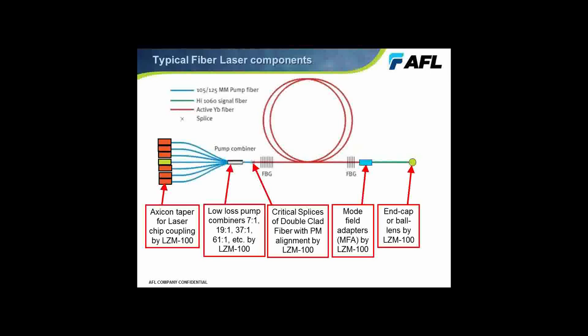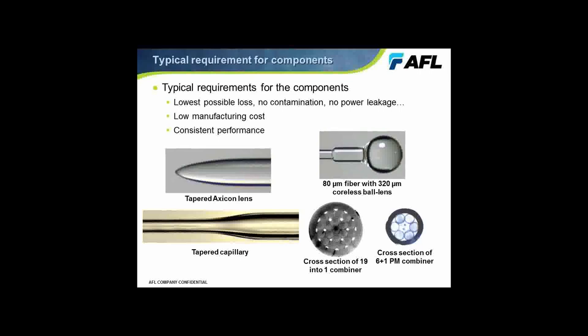A number of things are critical here beyond generating the pump combiner. On the output, we could have something to strip unwanted modes to achieve pure single-mode output — that could be an overclad. We may also use a mode field adapter to couple the energy into a relatively small core single-mode fiber, since the active core forming the lasing cavity might have an LMA, or large mode area. Finally, on the output we're probably going to have some kind of lens or end cap assembly.